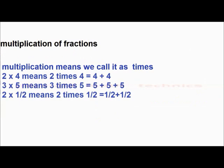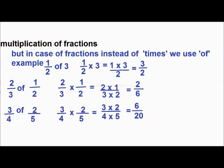Generally, we call multiplication as 'times': 2 into 4 means 2 times 4, that is 4 plus 4. And 3 into 5 means 3 times 5, that is 5 plus 5 plus 5. And 2 into 1 by 2 means 2 times 1 by 2, that is 1 by 2 plus 1 by 2. But in case of fractions, instead of 'times', we use 'of': 1 by 2 of 3 means 1 by 2 into 3, so 1 into 3 by 2, that is 3 by 2. And 2 by 3 of 1 by 2 is 2 by 3 multiplied by 1 by 2, equal to 2 into 1 by 3 into 2. And 3 by 4 of 2 by 5 is 3 by 4 into 2 by 5, equal to 3 into 2 by 4 into 5.